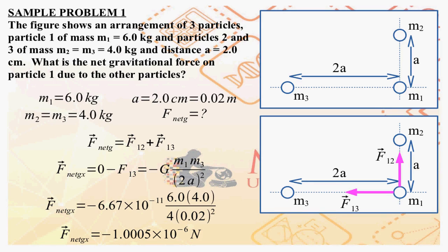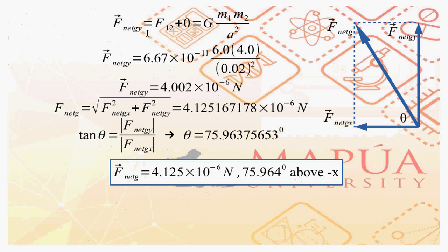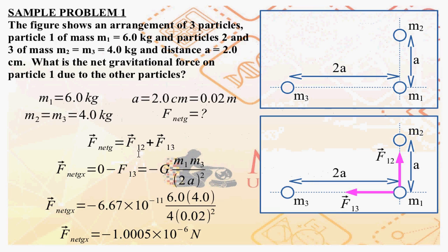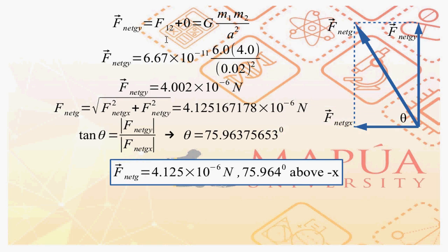Going now to the y-component: F_net_g_y equals the y-component of F12. F12 is vertical, so all of it is in the y-component in the positive direction, whereas F13 is horizontal and has no y-component. So F_net_g_y equals F12, which is also a gravitational force: G times m1 times m2 over a squared.